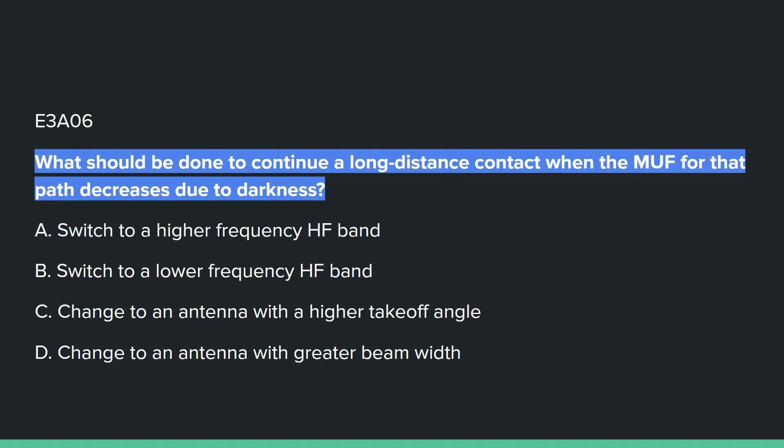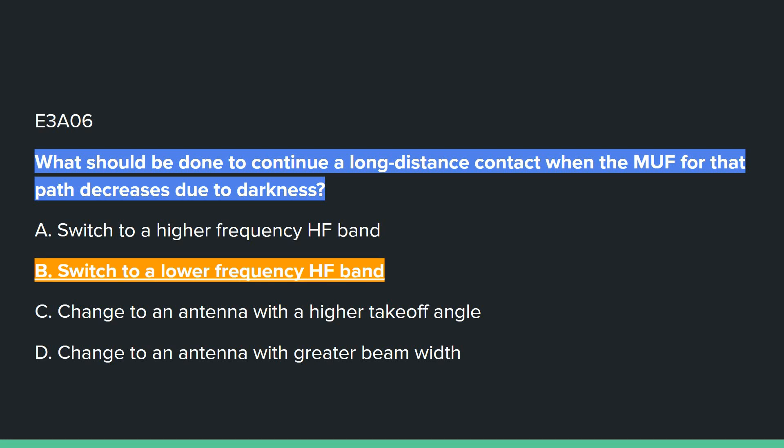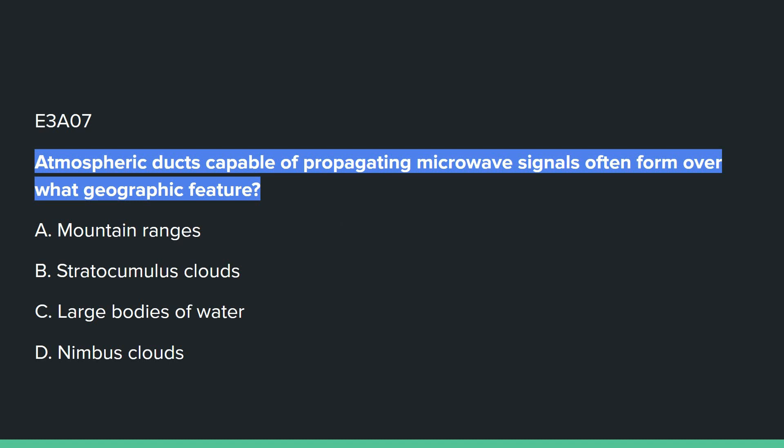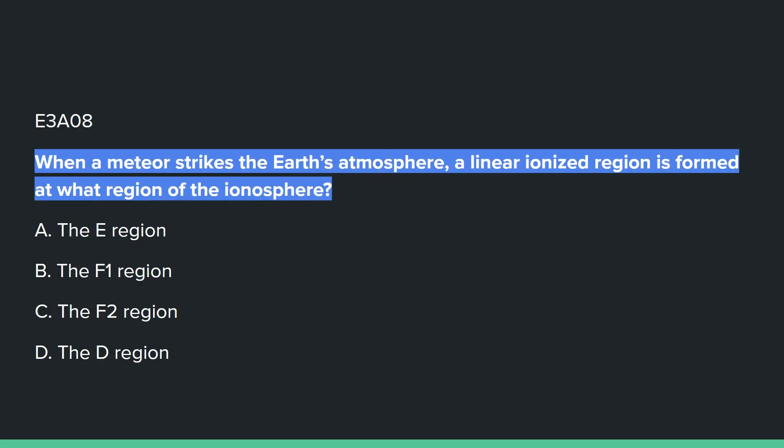E3A06: What should be done to continue a long distance contact when the MUF for that path decreases due to darkness? B: switch to a lower frequency HF band. E3A07: Atmospheric ducts capable of propagating microwave signals often form over what geographic feature? C: large bodies of water. E3A08: When a meteor strikes the Earth's atmosphere, a linear ionized region is formed at what region of the ionosphere? That's A: the E region.